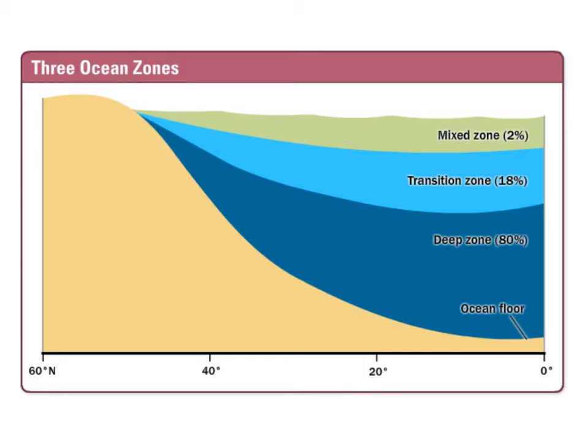The last thing we'll talk about in this video are the three different ocean zones. We have the deep ocean zone, which accounts for about 80% of our oceans. It is nutrient-rich, cold, and very dense — found down at the bottom of the ocean. Up at the poles, there are no distinct transitional areas — no thermoclines or density barriers — so we see mixing there.